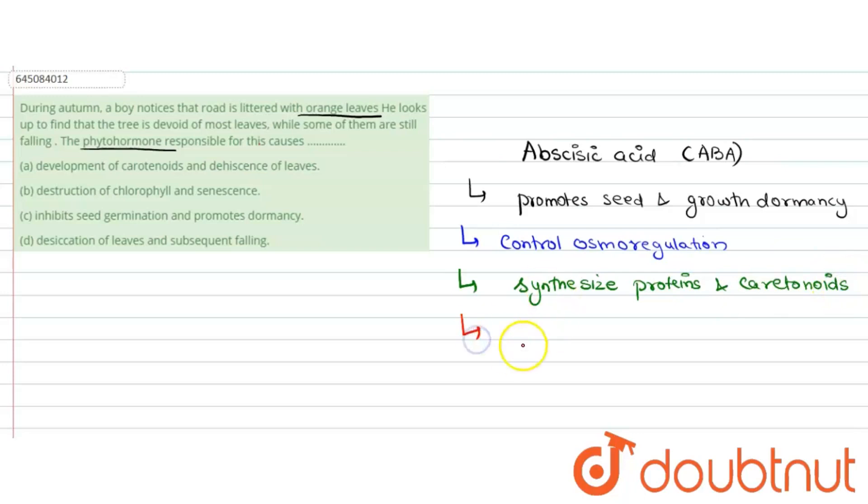Ultimately, it causes the aging of the plant, in which all the metabolic processes begin to slow down, which results in the falling of leaves. Here in the options, we see the various functions of phytohormones, which is our abscisic acid.